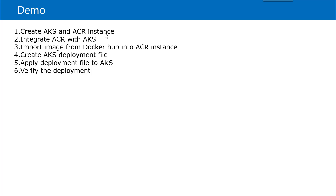This demo contains the following steps: first we will create an AKS and ACR instance using Azure CLI, then we will see the different integration settings between ACR and AKS. Once integration is done, we will import an NGINX image from Docker Hub into the ACR instance, then create an AKS deployment file, and finally apply the deployment file to AKS and verify the deployment. Let's get started.